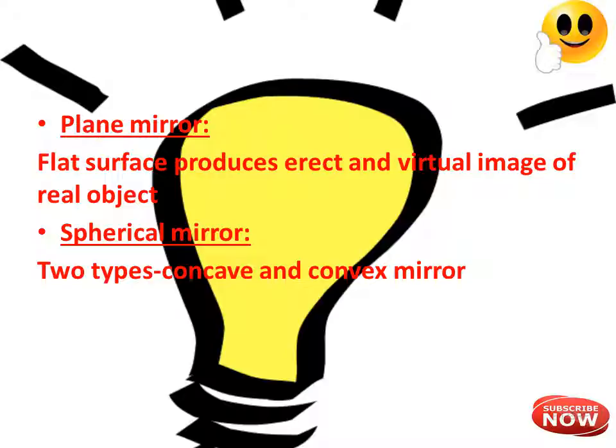Coming to spherical mirrors — plane mirrors have a flat surface and produce an erect, virtual image of a real object. A spherical mirror is so called because it is considered to be a part of a sphere. There are two types of spherical mirrors: concave mirror and convex mirror.